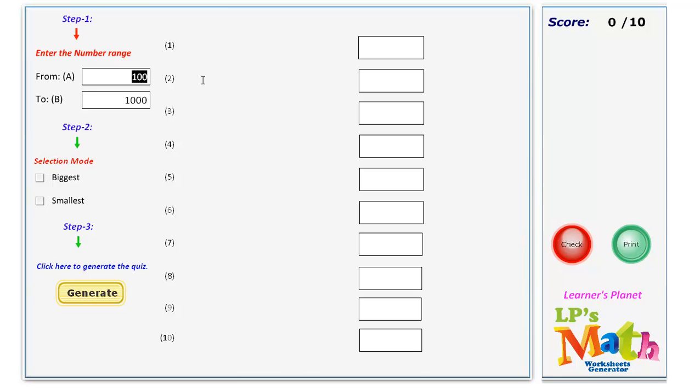Enter the number range. Select the mode. If you wish to select biggest numbers from the set of given numbers, select biggest. Else, select smallest. Click to generate the quiz. Your quiz will be generated.